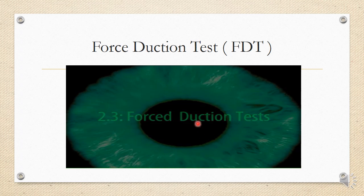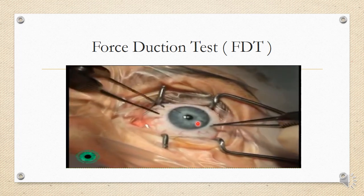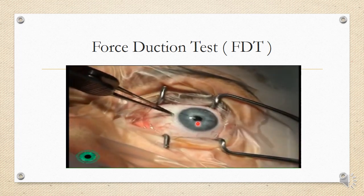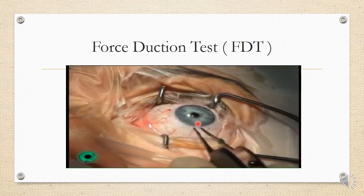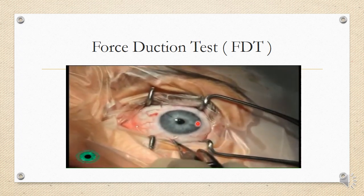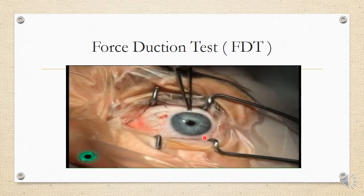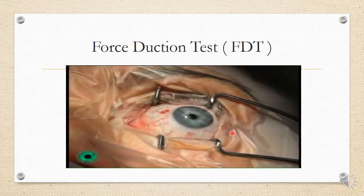Please routinely perform force duction test before every strabismus procedure. Here the limbus is gripped with St. Martin's forceps, the globe moved anteriorly to put the rectus muscles on stretch, and the eye moved into adduction, abduction, and elevation. If the eye moves freely in all directions of gaze with no restriction found, that tells you it is a paralytic squint and not a restrictive squint.